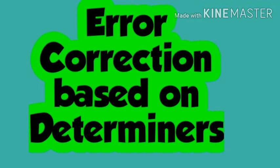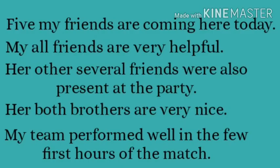Hello friends! In this video, I'm going to point out some errors based on determiners. The errors are on the position of determiners and the order of determiners when more than one determiner has been used in a sentence, and the order is not correct. So let's correct them.